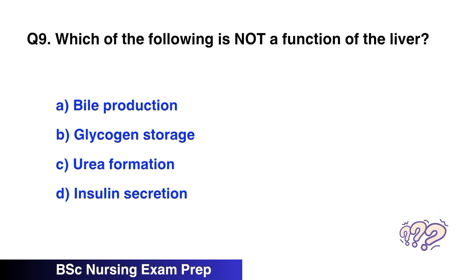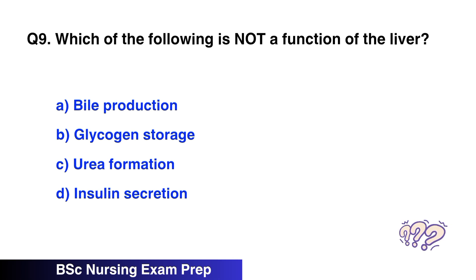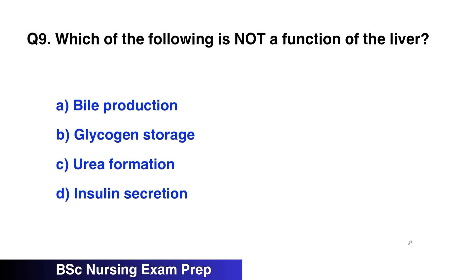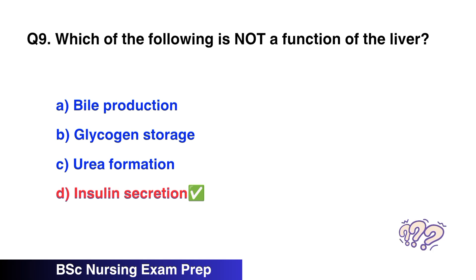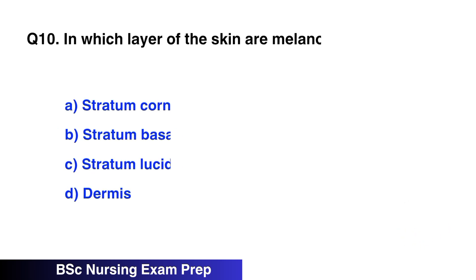Question 9. Which of the following is not a function of the liver? The correct option is D, insulin secretion.